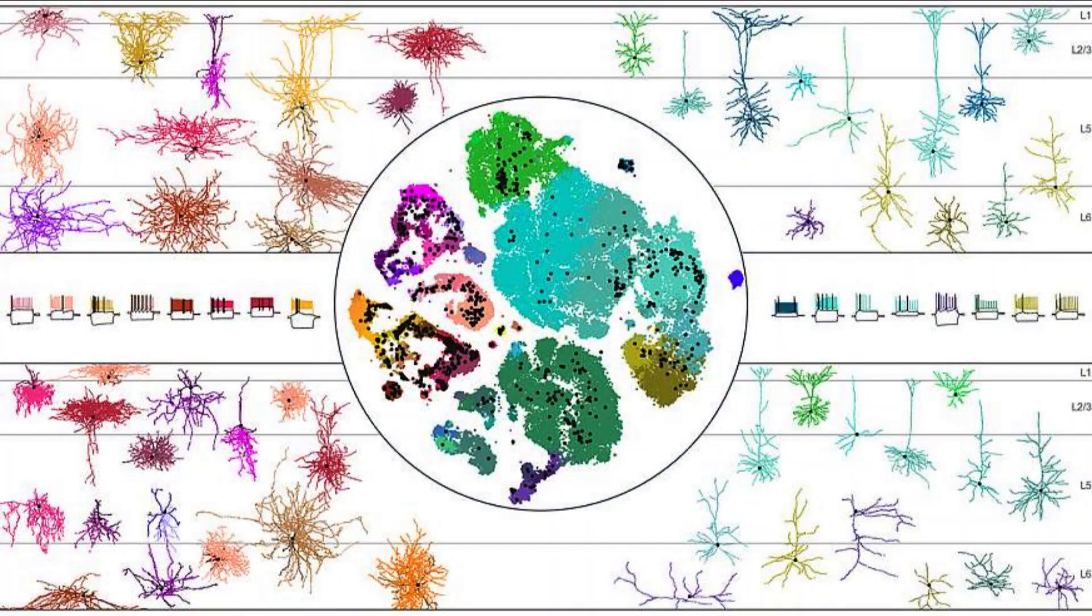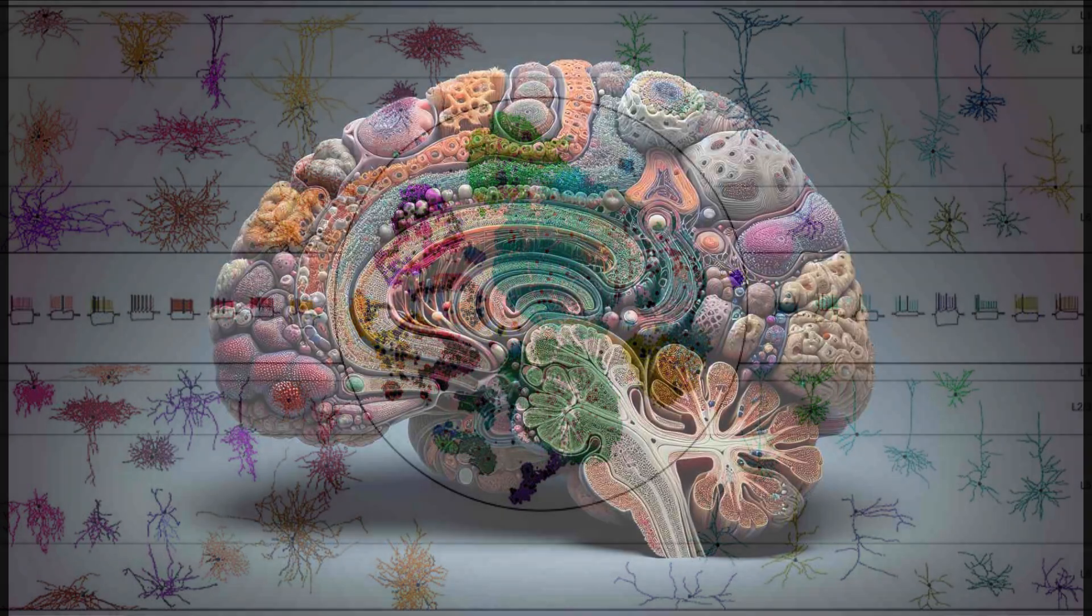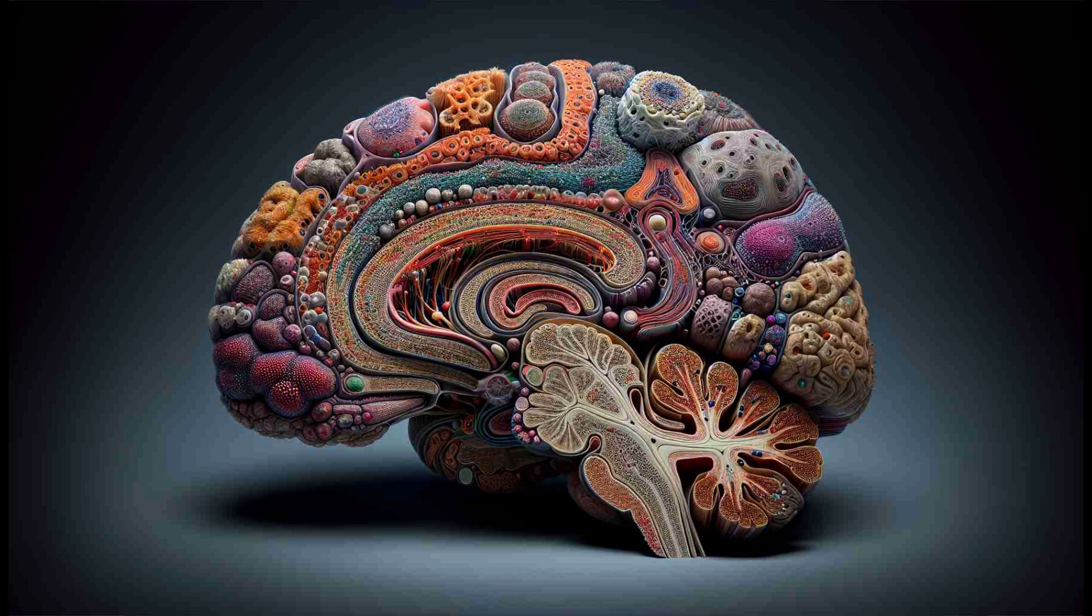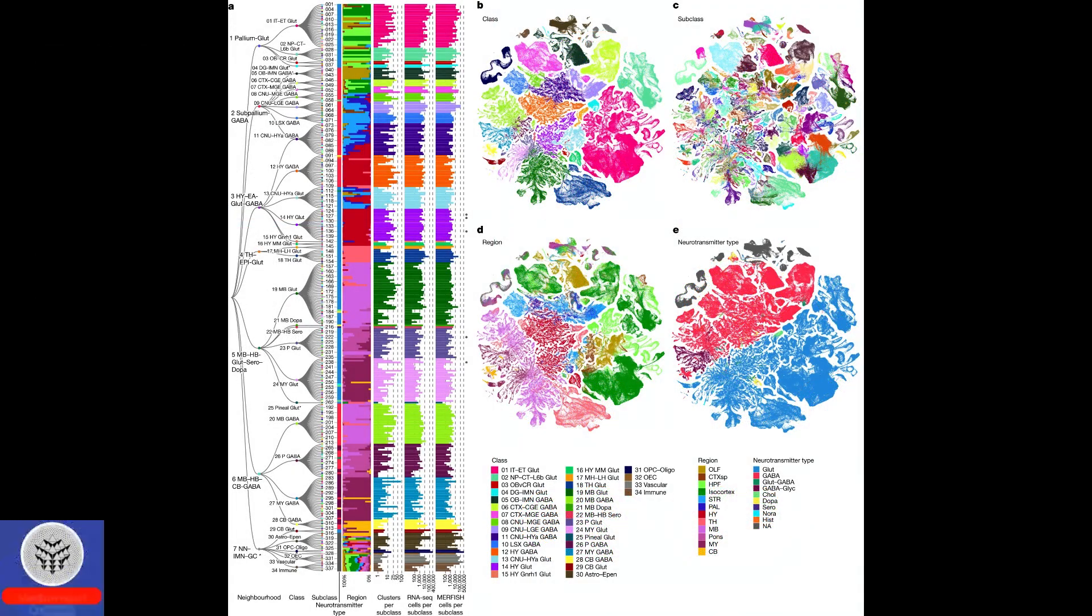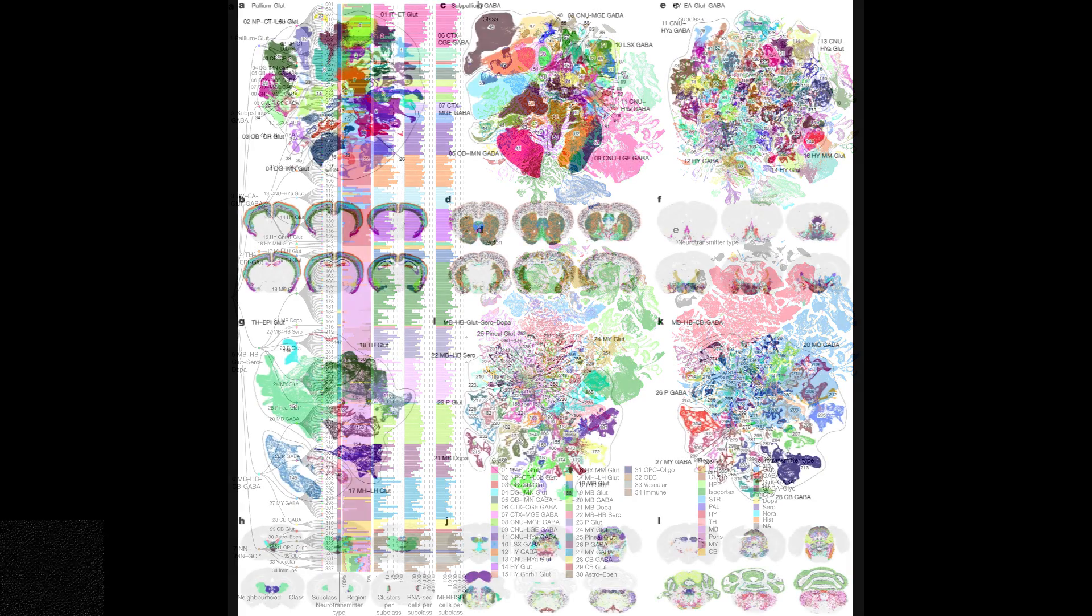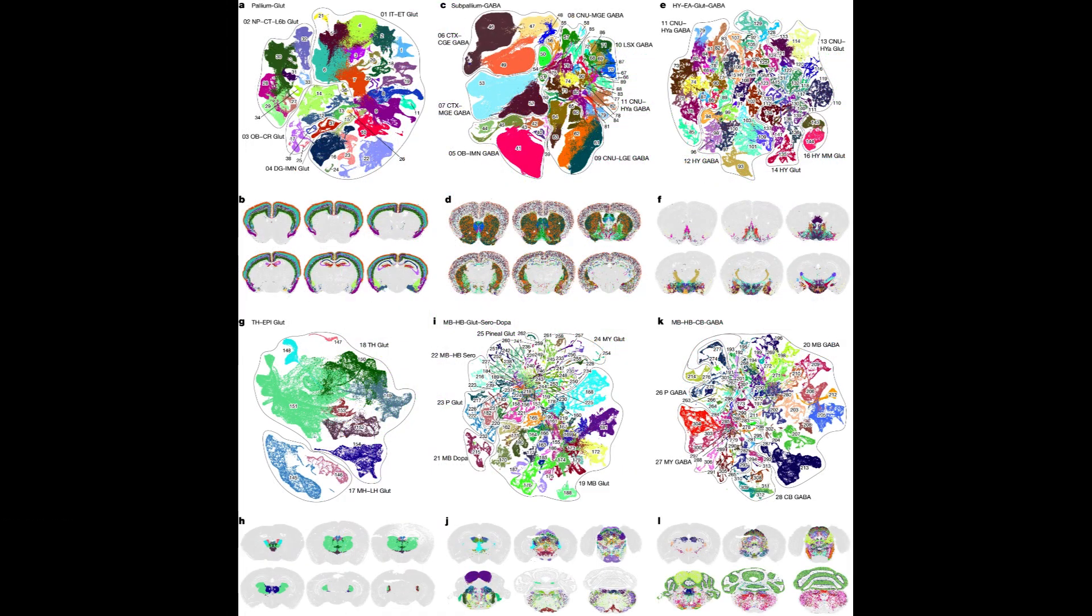In this atlas, a comprehensive representation of cellular arrangement and variation throughout the mouse brain is presented, incorporating structural, transcriptomic and epigenetic data. Additionally, the atlas offers valuable insights into the neurotransmitters and neuropeptides utilized by distinct cell populations, as well as the interconnections between different cell types within the brain.